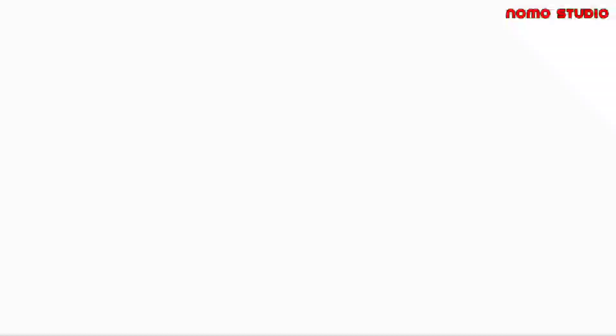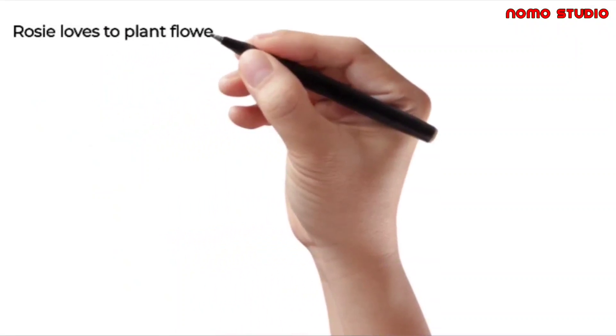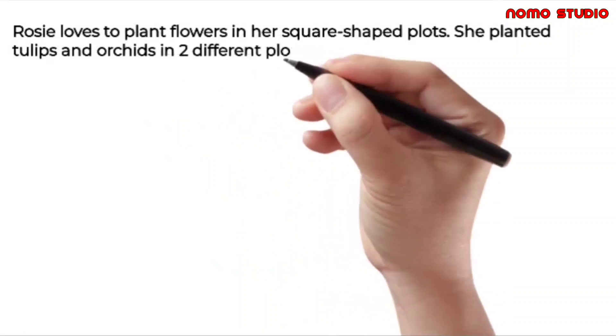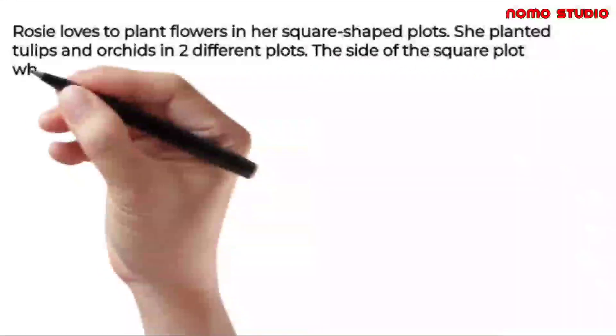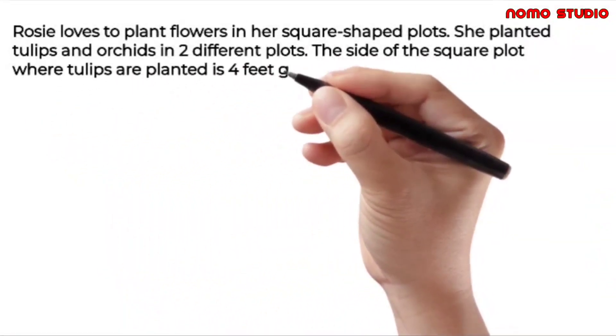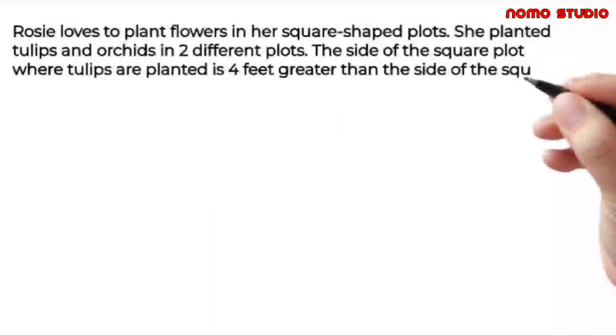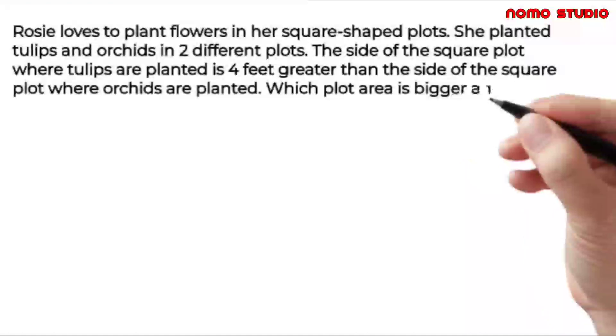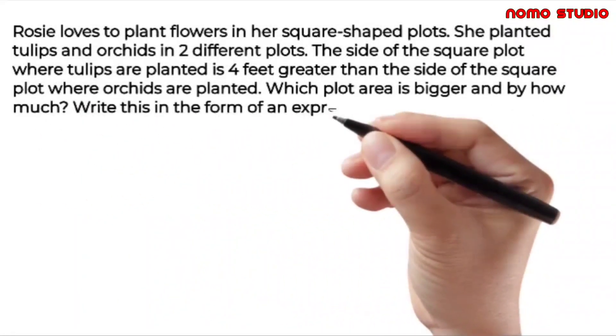Next example. Rosie loves to plant flowers in her square-shaped plots. She planted tulips and orchids in two different plots. The side of the square plot where tulips are planted is 4 feet greater than the side of the square plot where orchids are planted. Which plot area is bigger and by how much? Write this in the form of an expression.